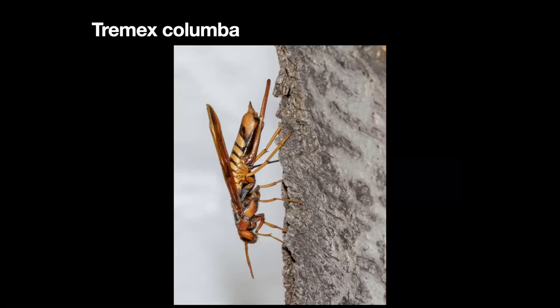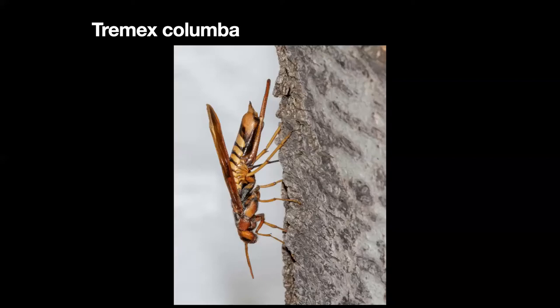To understand the difference between aculeate wasps and others — here is Tremex columba, a wood wasp placed in the group called sawflies. You can see the black segment going straight into this aspen. She lays her eggs — her egg travels through that black tube into the wood. The brown part that sticks upright close to her abdomen is simply the sheath that the ovipositor fits into when she's not laying an egg, which is most of the time.